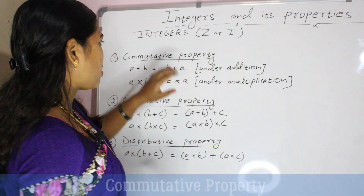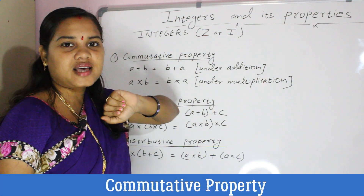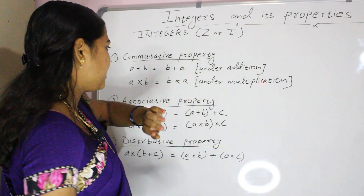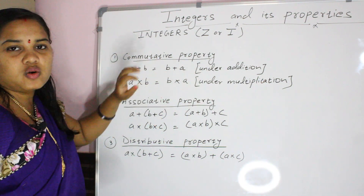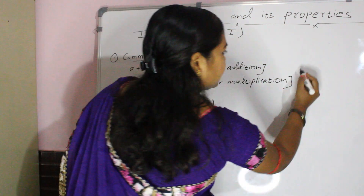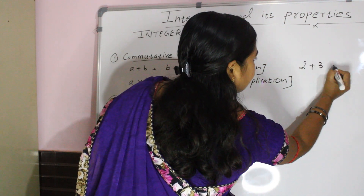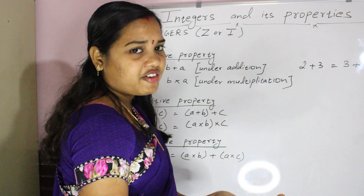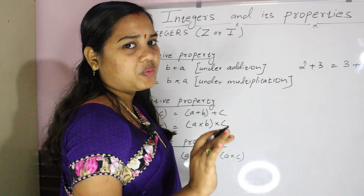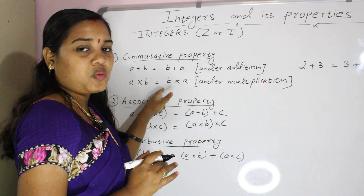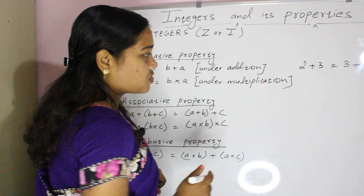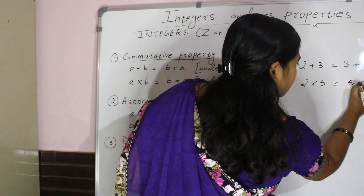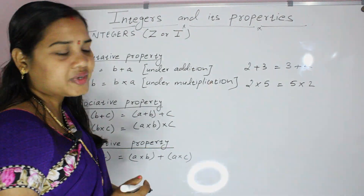The first property is the commutative property. Integers are commutative under addition and also under multiplication. Under addition: A plus B equals B plus A. Example: two plus three equals three plus two — both give five. Under multiplication: two into five equals five into two — both give ten. So integers are commutative under addition and multiplication.